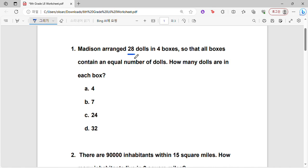Madison arranged 28 dolls in 4 boxes so that all boxes contain an equal number of dolls. How many dolls are in each box? So Madison has 28 dolls and she wants to evenly distribute them into 4 boxes. That would mean that basically she wants to equally divide them into 4 boxes.